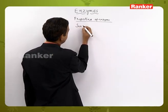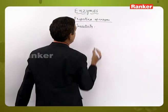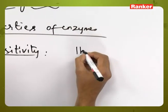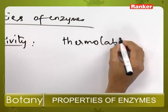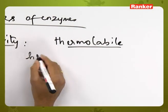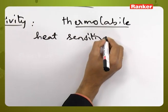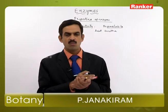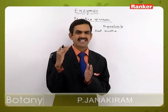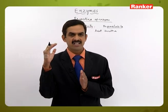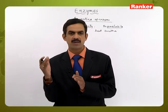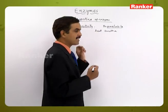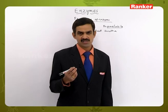The next property is sensitivity. Enzymes are sensitive to temperature and pH. They are thermolabile, meaning they are heat sensitive. As temperature increases from zero, the catalytic activity of the enzyme increases and reaches a peak at the optimum temperature. Beyond the optimum temperature, the catalytic ability decreases. At high temperatures, enzymes become destructive because they are proteinaceous in nature.